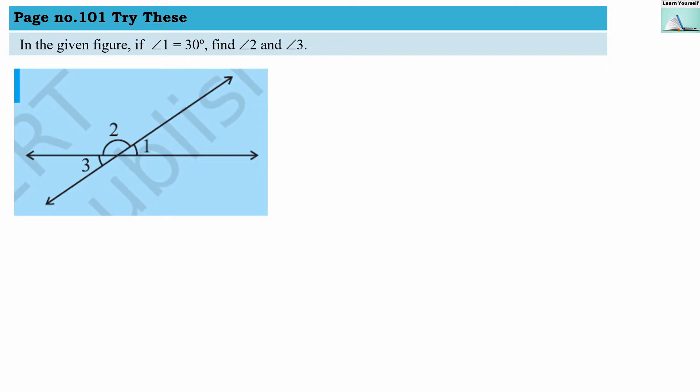Welcome to Learn Yourself, page number 101, try this. In the given figure, if angle 1 is 30 degrees, find angle 2 and 3. So this measure we know is 30 degrees. We have to find out angle 2 and 3. Here we know that these two lines are intersecting each other.